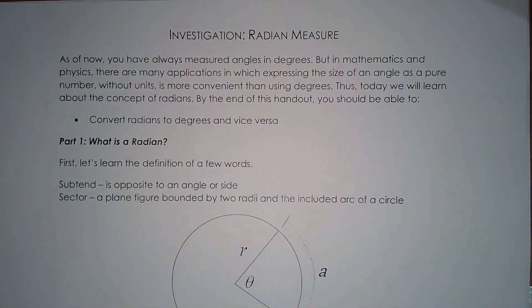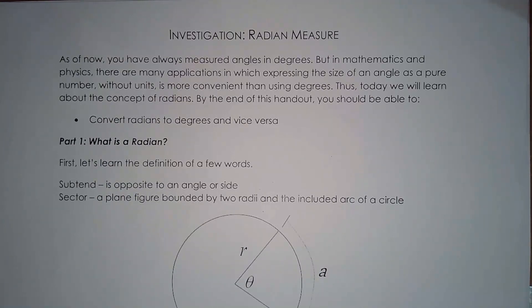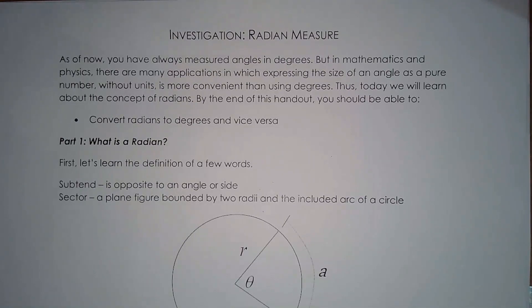This first lesson of the new unit is on radian measure. Ever since you were studying angles in elementary school, grade 9, grade 10, and grade 11, we measured the size of an angle using degrees. But there's actually another unit we're going to learn for grade 12, which is called radians. The goal is still the same — you want to measure the size of the angle — but instead of using degrees, you're using radians.